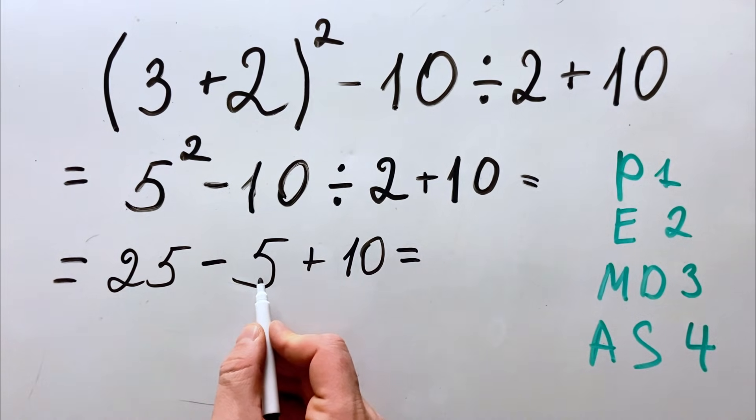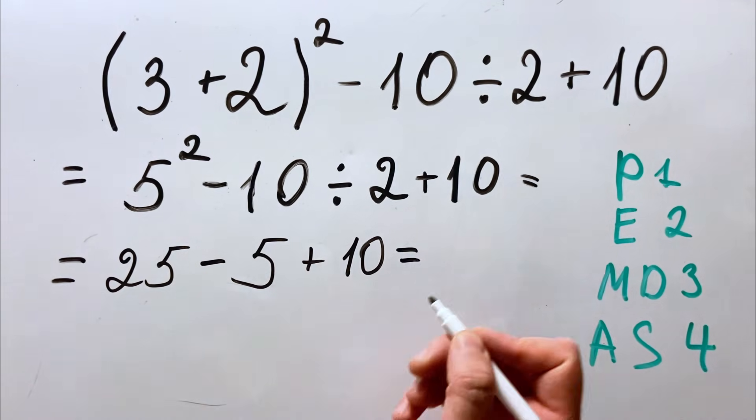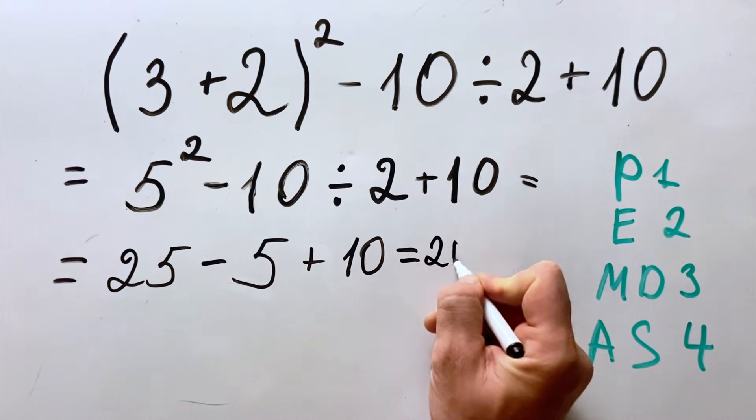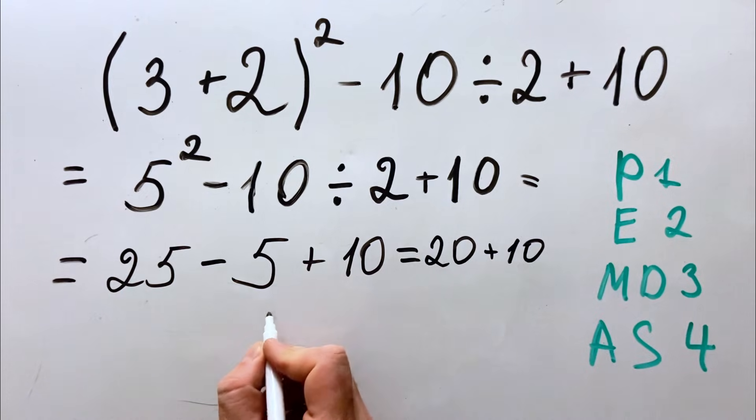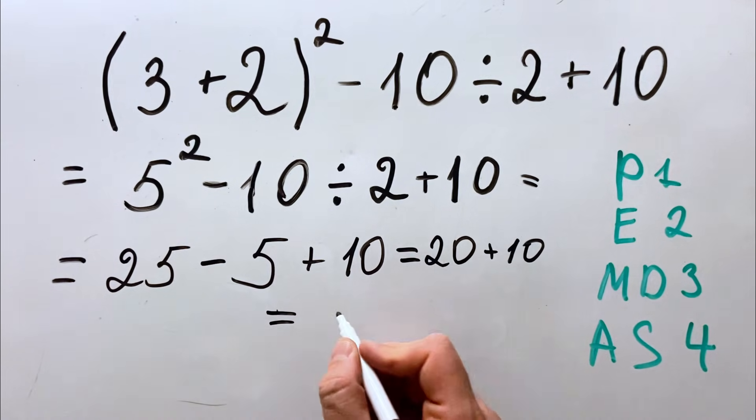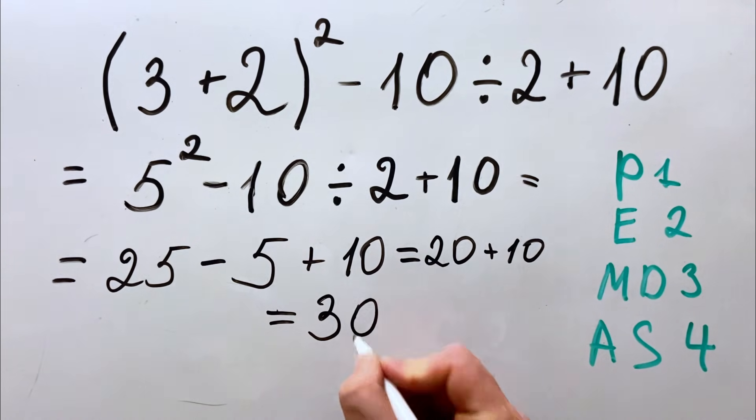So 25 minus 5 equals 20. So we have 20 plus 10, and the result is 30.